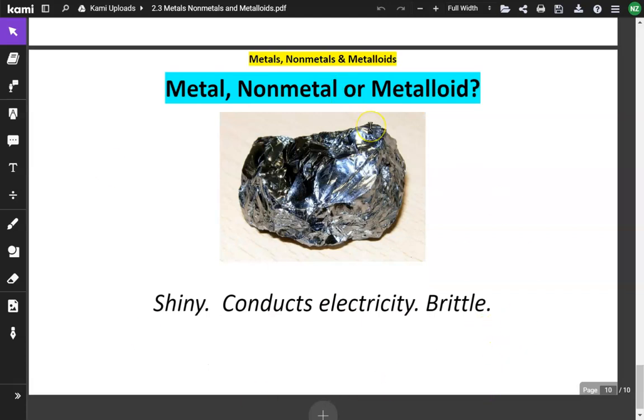Here, this is shiny, which is a property of a metal. It conducts electricity, which is also a property of a metal. But it's brittle, which is a property of a non-metal. So, this would be a metalloid. And this is actually a chunk of silicon. So, those are the properties of metals, non-metals, and metalloids.